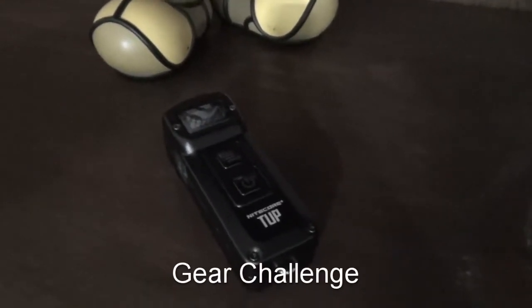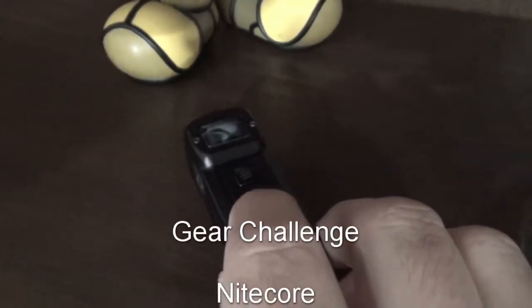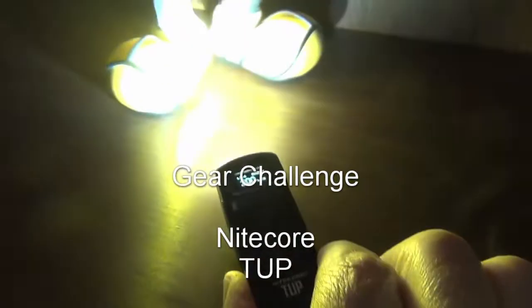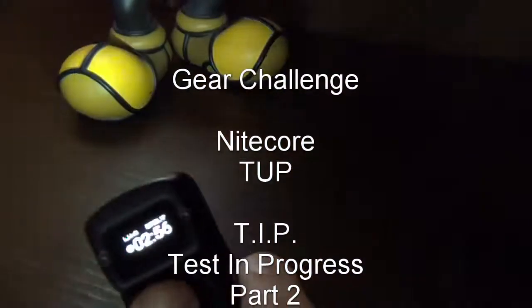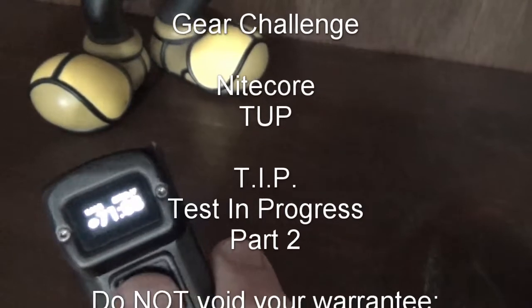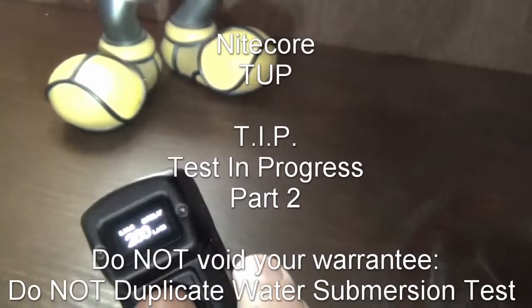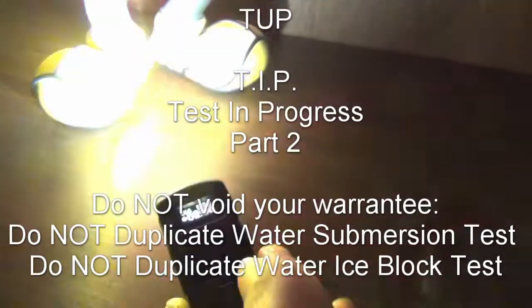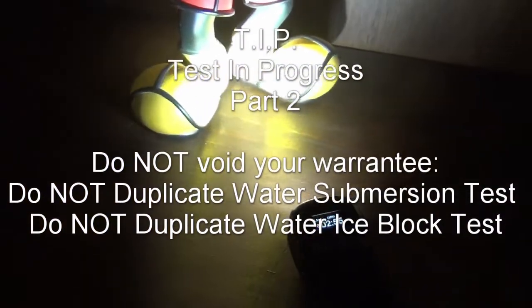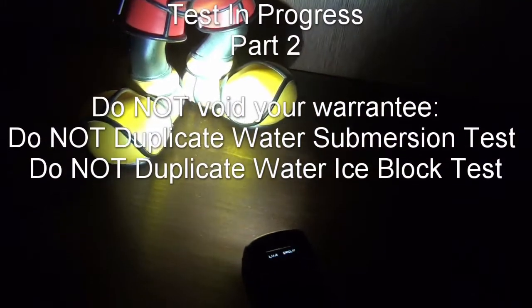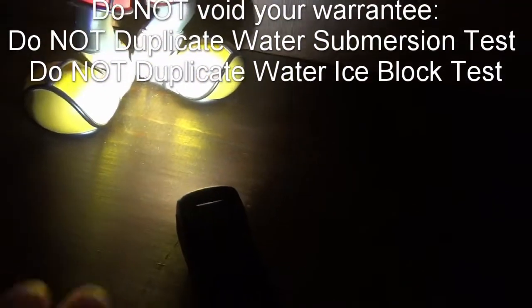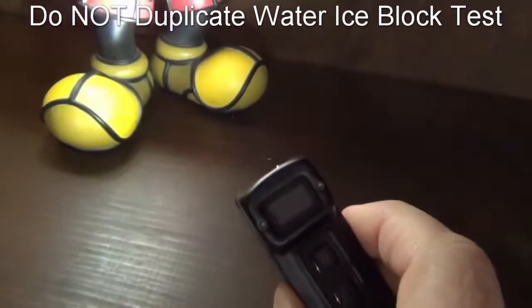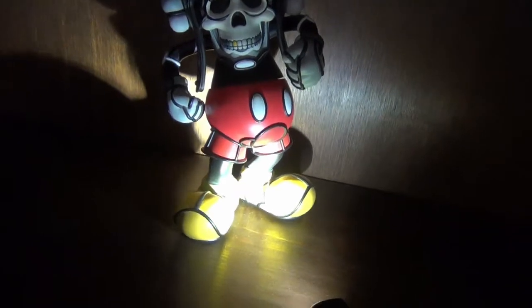With Crazy Mickey's evil grin in the reflection of the screen, it's only appropriate that we run a test in progress on heat from the top, the Nightcore TUP. Currently at the 200 rating, actually that went down to 1, so let's ramp it back up to 200. We're on the 200 rating. We'll leave it on and start the countdown and see about runtime compared to heat from the reflection and the bezel area of the body of the light. We'll leave this on for Crazy Mickey and check back later.